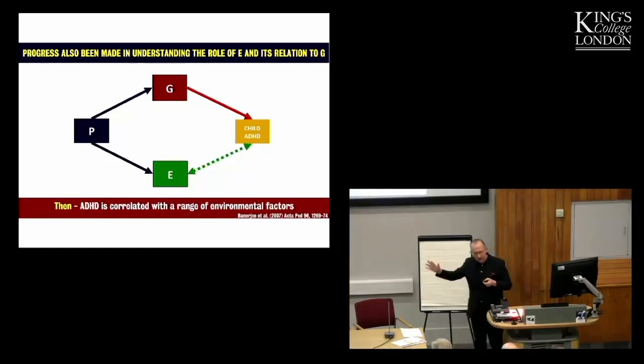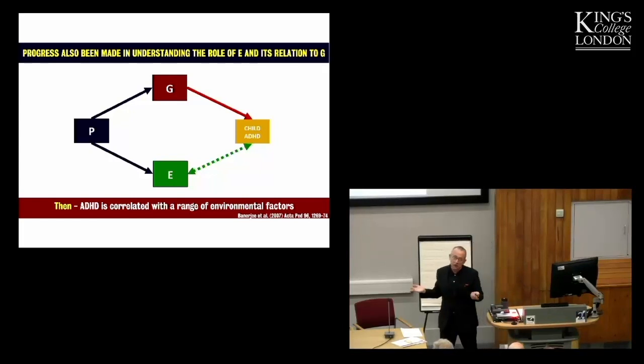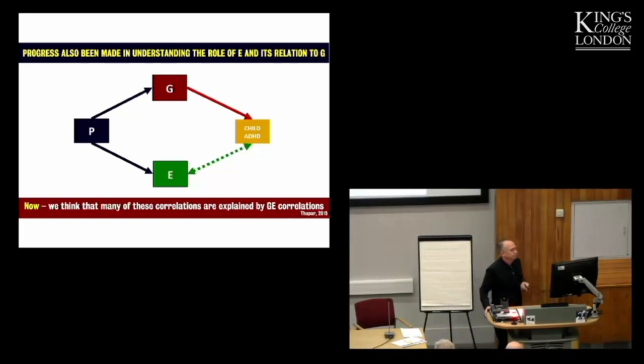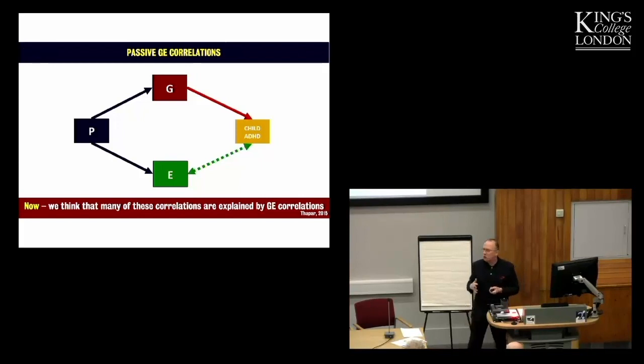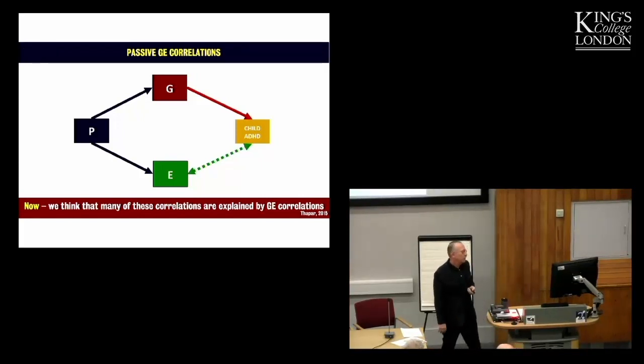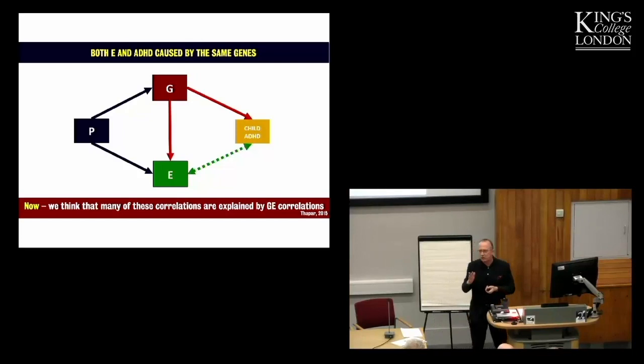So then, 10 years ago, ADHD we knew was correlated with a whole range of environmental risk factors. Now, we think that many of those correlations aren't in fact causal, but are probably due to gene-environment correlation. First, there are so-called passive gene-environment correlations, and that's the idea that genes both shape the environment and determine the disorder. The same genes that are passed on by the parents.